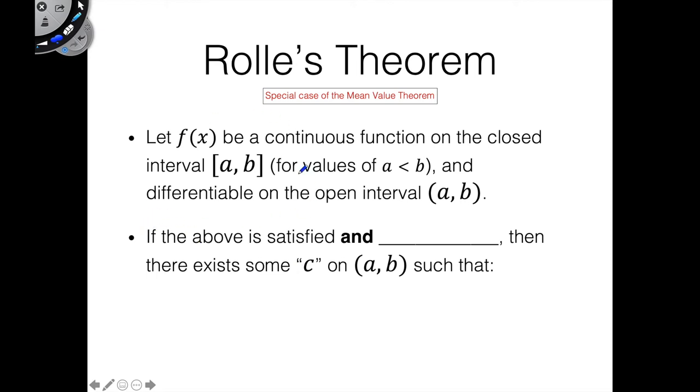So, we say that if the above is true, and this other condition is true, that is f of b equals f of a, if this condition is met, then we have this point c, the same point c on the interval a comma b, such that the following is true. f prime of c equals 0. And you can kind of see how this naturally stems from the mean value theorem. Because if we were given that f of b equals f of a, and you plug that into the original slope formula with the mean value theorem, you will reach the same conclusion.